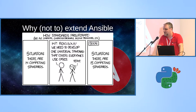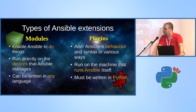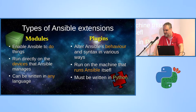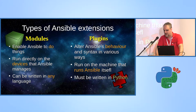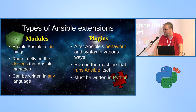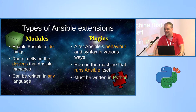So how do we extend Ansible? Modules are the way that Ansible does things — they actually run directly on the devices that you manage with Ansible, and you can write them in any language you want, though it's nicer to write them in Python. Then you have plugins — plugins essentially hook directly into the Ansible code. There are many different kinds of plugins, and because Ansible itself is written in Python, you have to write plugins in Python. They run on the machine where you run Ansible itself. Any questions so far?